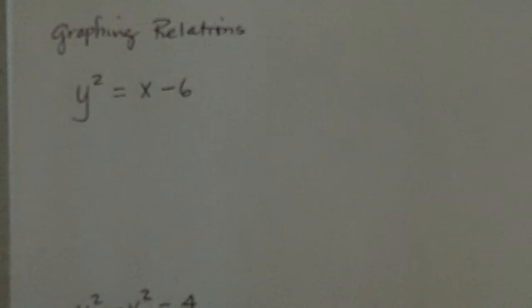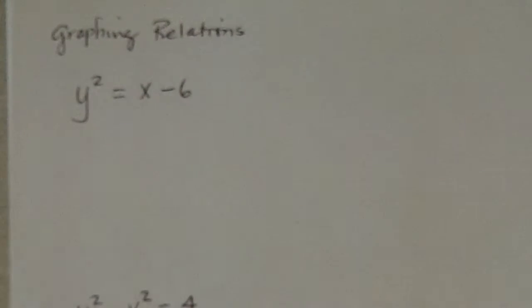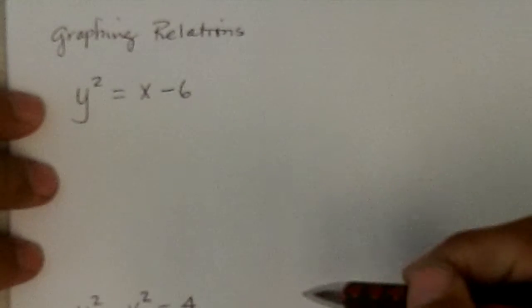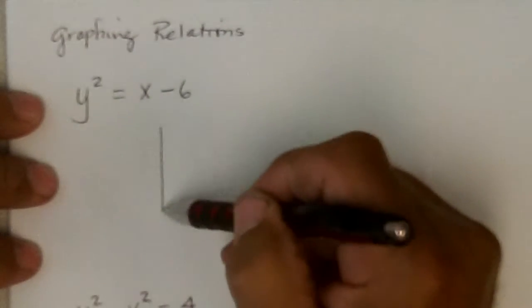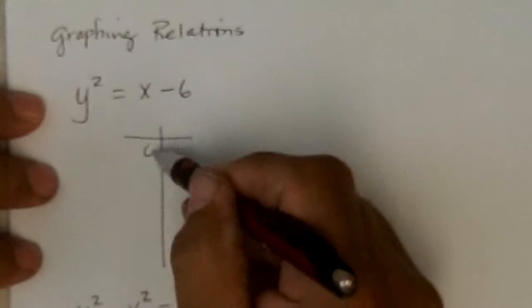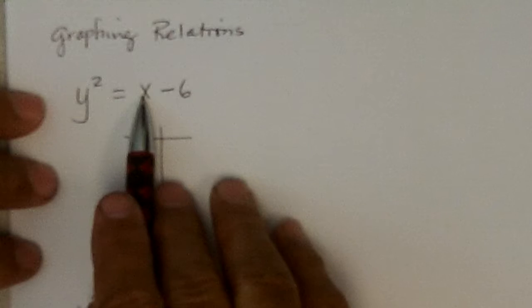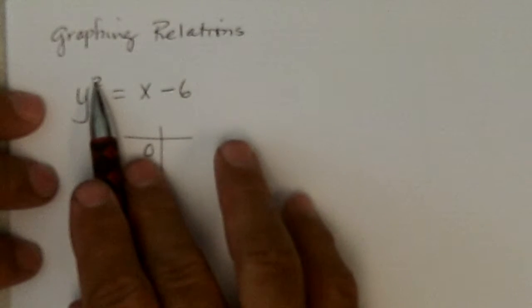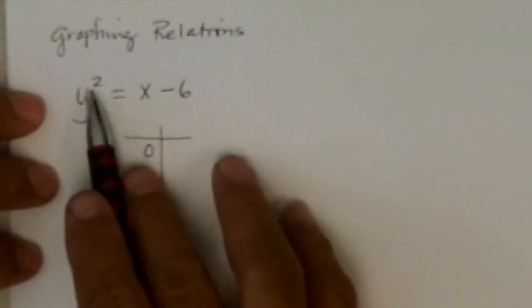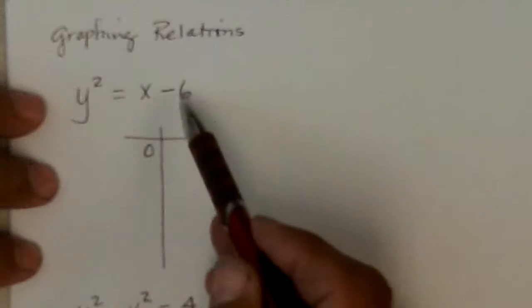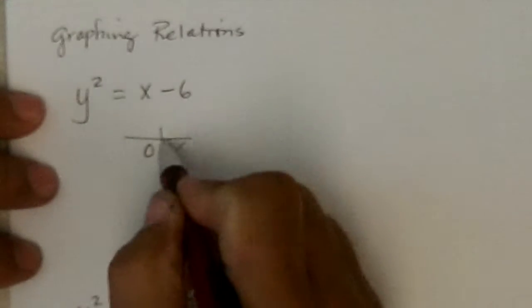All right, let's start now graphing relations. Let's start with this one. Probably the best thing to do is look for intercepts. Let x be 0. If x is 0, we'd have y squared equals negative 6. Something squared is always positive, unless you're doing imaginary, and that won't be on a graph. So it's not possible.